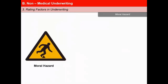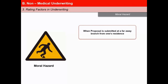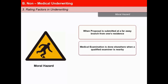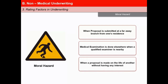Moral hazard is said to exist when certain circumstances or characteristics of an individual's lifestyle, habits, reputation, financial situation and mental health indicate that he or she may intentionally engage in actions that increase the risk. Factors which may suggest moral hazard include: when a proposal is submitted at a branch located far away from the place of residence; when a medical examination is done elsewhere even when a qualified medical examiner is available nearby; and when a proposal is made on the life of another person without a clear insurable interest or the nominee is not a close dependent. In each of these cases, an inquiry may be made.